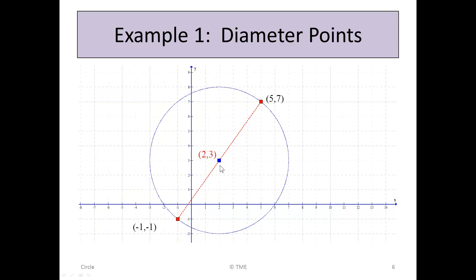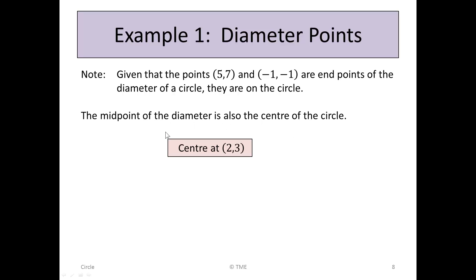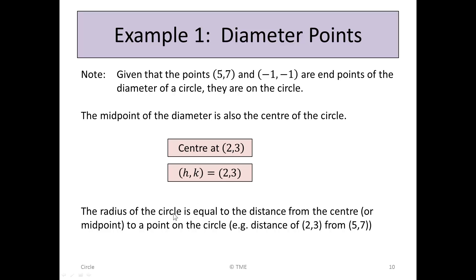Here we can see visually that (2, 3) is the centre of the circle. Since the endpoints (5, 7) and (-1, -1) lie on the circle, we can get the radius from the distance between the centre and one of those points. The midpoint of the diameter is also the centre of the circle, so h, k is at (2, 3). The radius equals the distance from the centre to a point on the circle — so from (2, 3) to either (5, 7) or (-1, -1). We'll take the distance from (2, 3) to (5, 7).